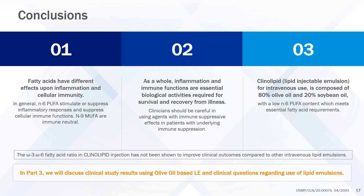Clinolipid is composed of 80% olive oil and 20% soybean oil. The mixture has a low omega-6 PUFA content, but enough to meet essential fatty acid requirements. In Part 3, we will discuss clinical study results using clinolipid and clinical questions regarding the use of lipid emulsion.